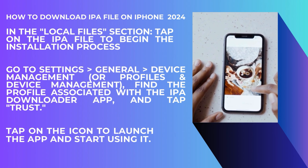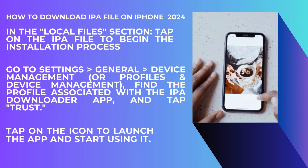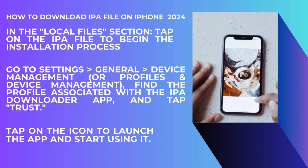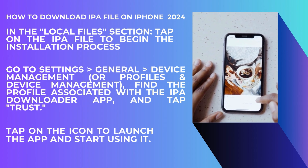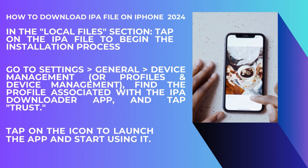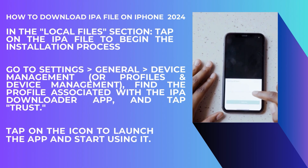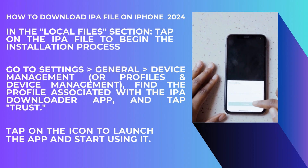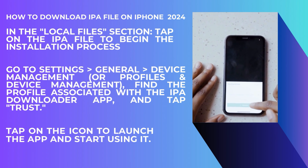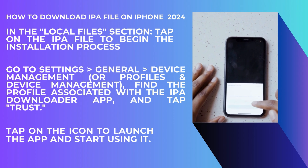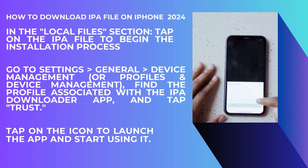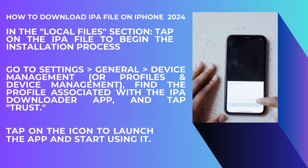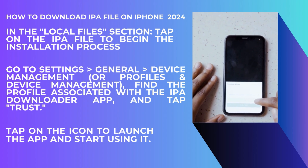Depending on the IPA downloader app you are using, you might need to trust the app developer in your iPhone settings. To do this, go to Settings > General > Device Management, or Profiles and Device Management. Find the profile associated with the IPA downloader app and tap 'Trust.' Once you have completed all the necessary steps, the IPA file will be installed on your iPhone.